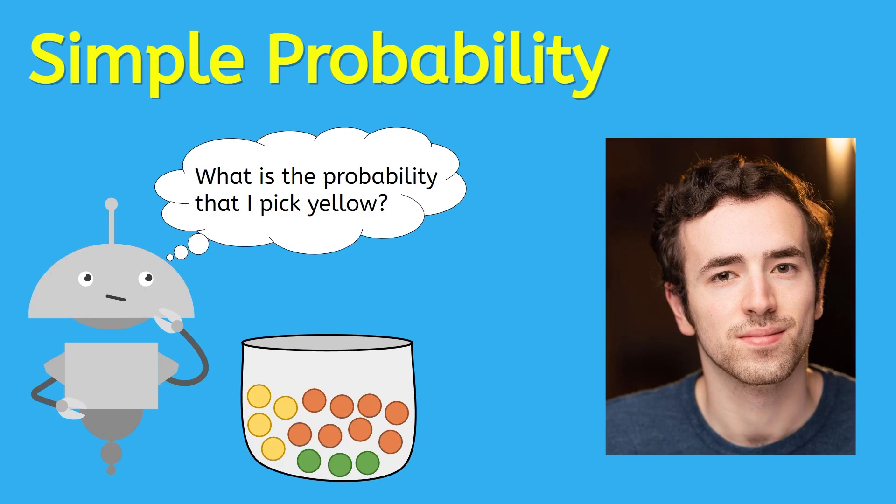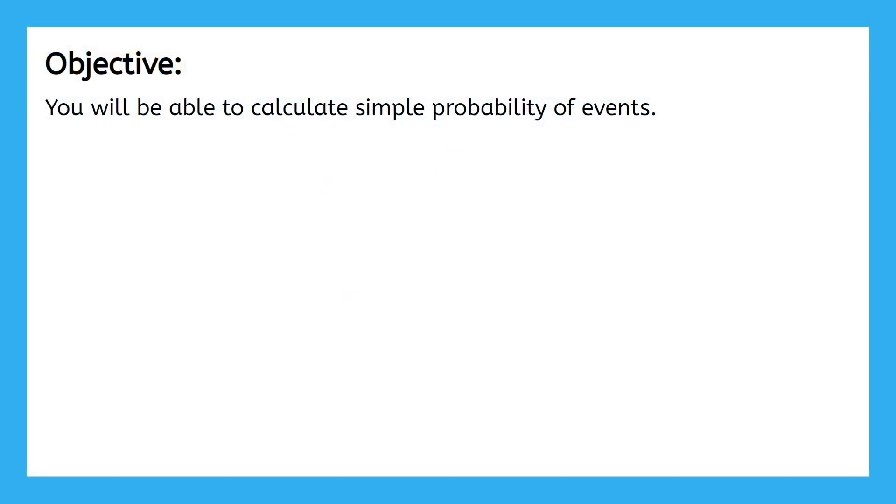Hey everyone, it's Justin again. In this lesson, we're going to be talking about simple probability. It's called simple probability just because it's the first building block that we can use to build towards being able to analyze more complex probability scenarios. By the end of this lesson, you'll be able to calculate the simple probability of events.